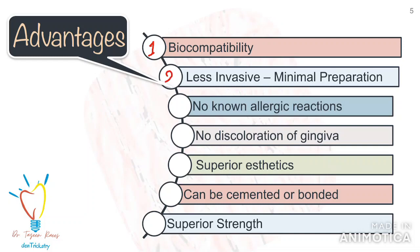Zirconia is less invasive. Zirconia restorations, especially the monolithic options, require a lesser amount of tooth reduction, preserving more tooth structure and improving the resistance form of the tooth. No allergic reactions have been reported to zirconia crowns; therefore, it can be given in patients with non-metal allergies. There is no black line or discoloration of the gingiva — something which is usually seen with PFM or metal ceramic crowns.